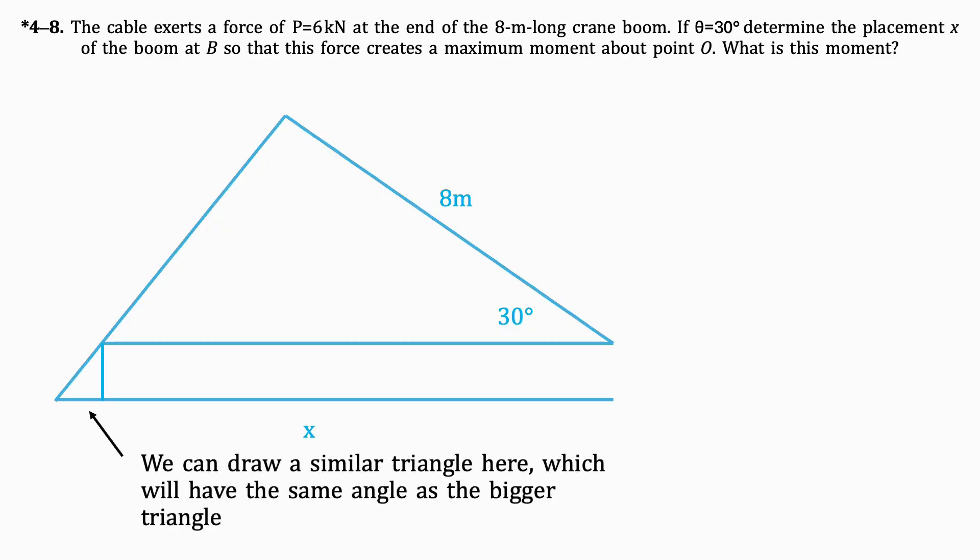Then we can draw a similar triangle on the bottom left corner, which will have the same angle of 30 degrees as the bigger triangle. This small triangle will have a height of 1m, which was given in the question.